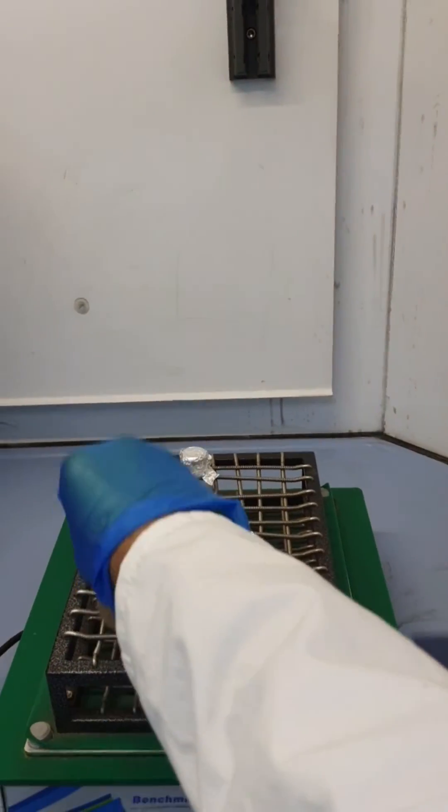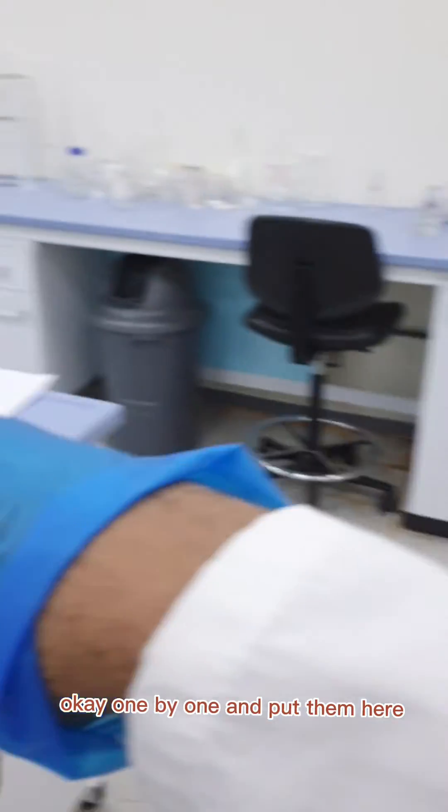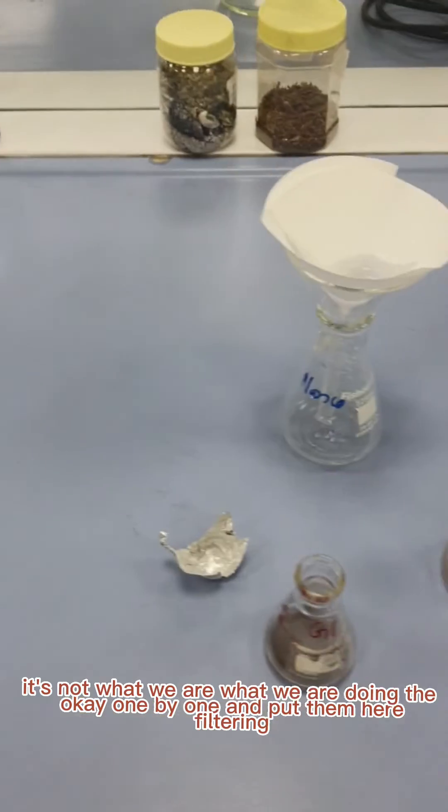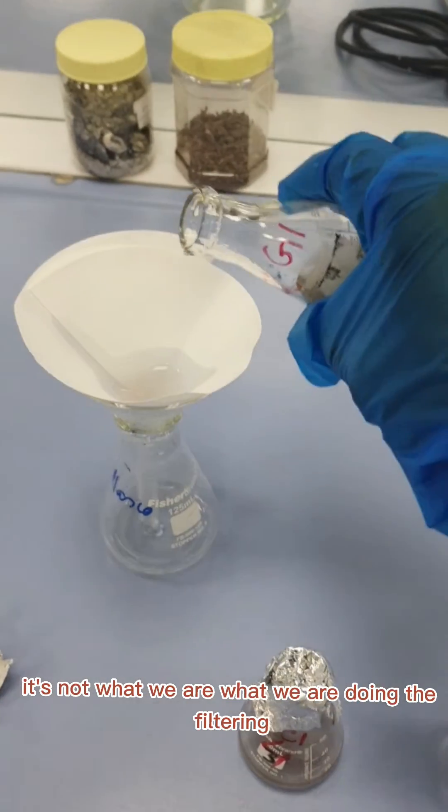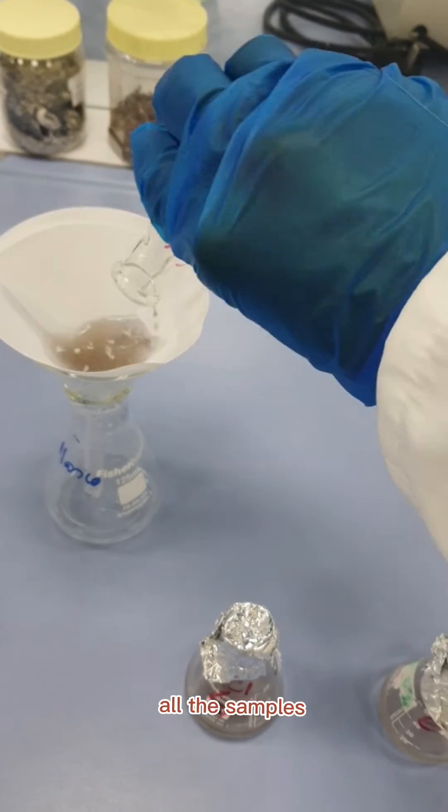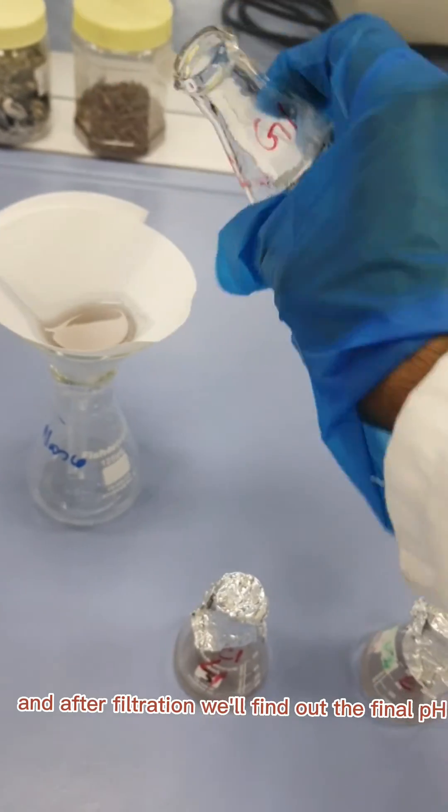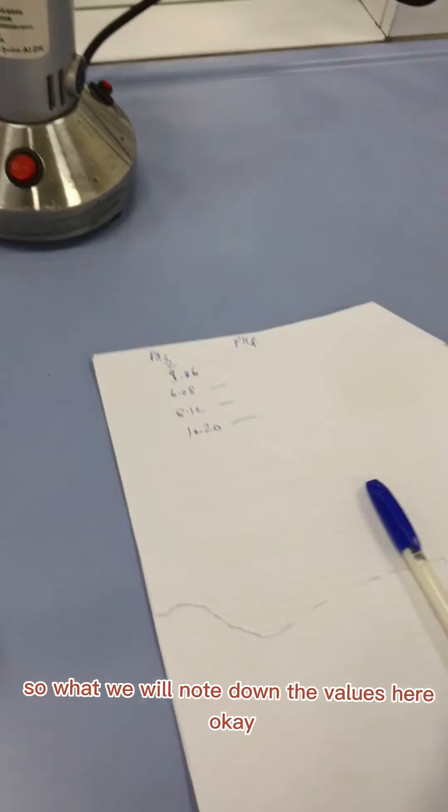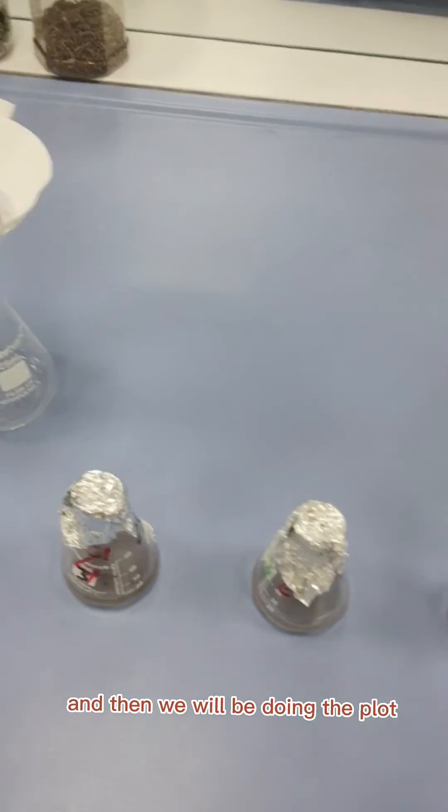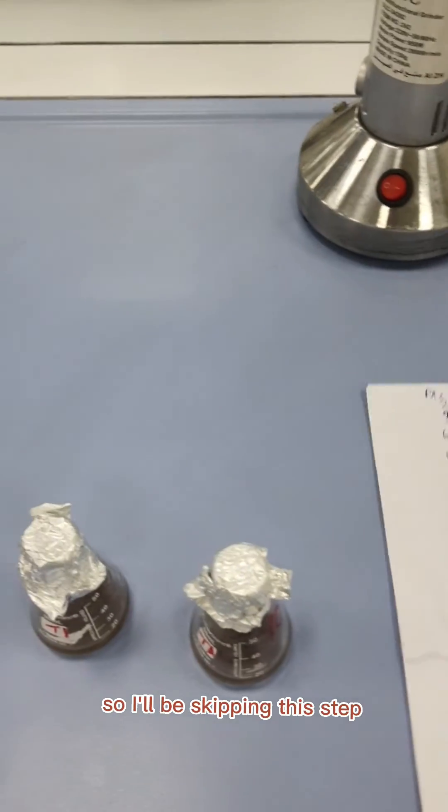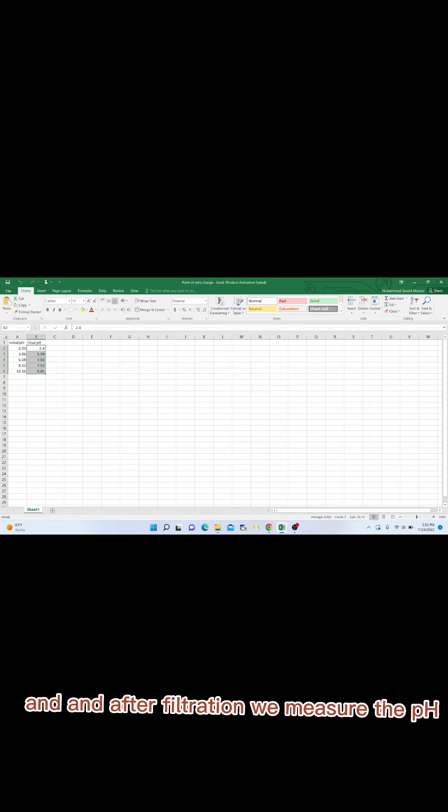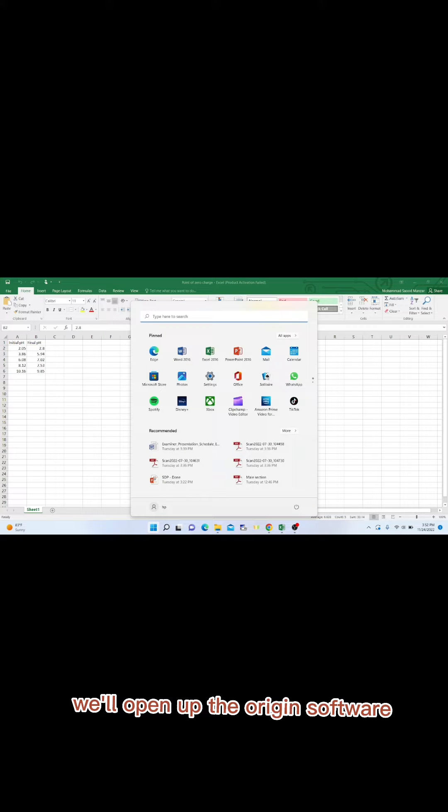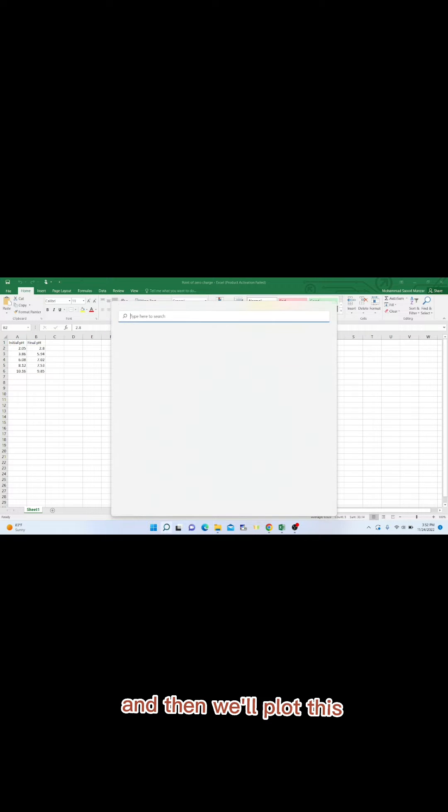After 24 hours is done, what I will do is take out these vials one by one. Now what we are doing is filtering all the samples. After filtration we will find out the final pH. We will note down the values here and then we will be doing the plotting.